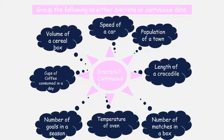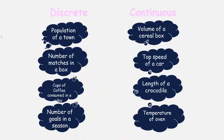Number of matches in a box - that's a count, that is discrete. Temperature of an oven - that is a measurement of how hot it is in the oven, that is continuous. Number of goals in a season - in a hockey season, that is a count, that is discrete. And the number of cups of coffee you might have in a day - for me, it's always more than one - that is a count, so that is discrete.